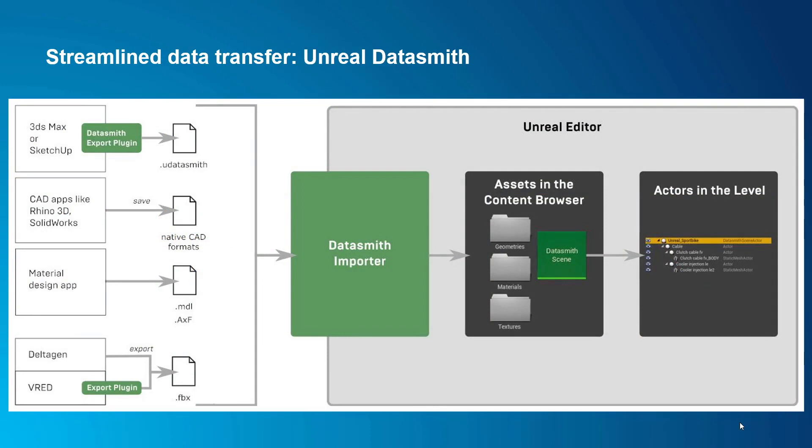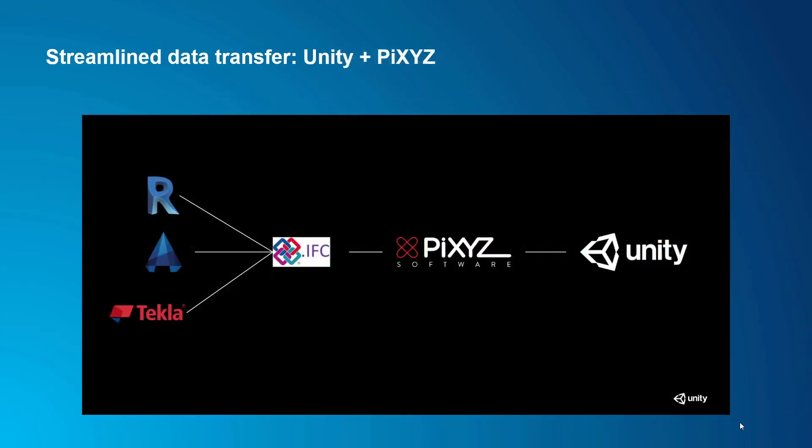The game engine manufacturers have come up with new technologies for streamlined data transfer. For instance, Unreal Datasmith is a format which allows external tools to export data in exactly the form that Unreal Engine wants to consume it. Similarly, for Unity, the external tool PiXYZ allows you to take Revit or other CAD data into PiXYZ, which prepares the data and feeds it into Unity.